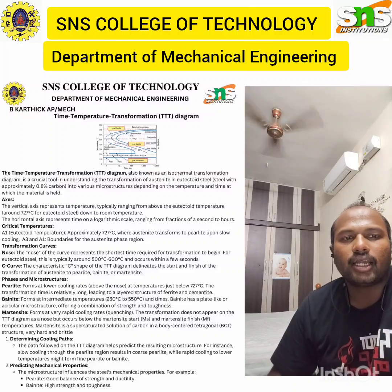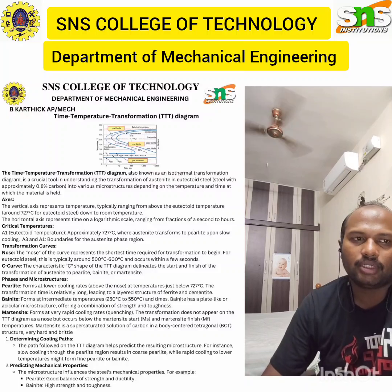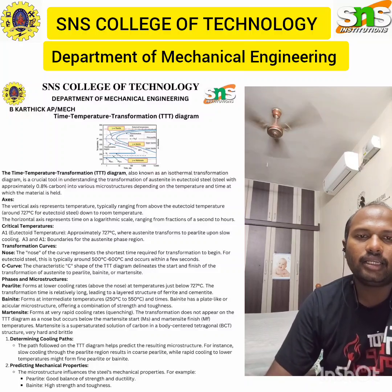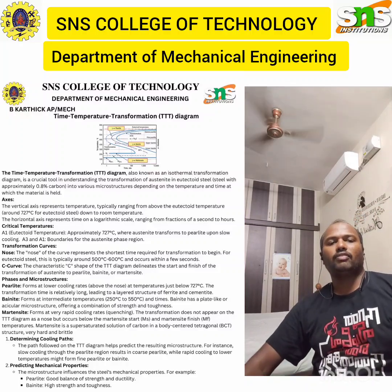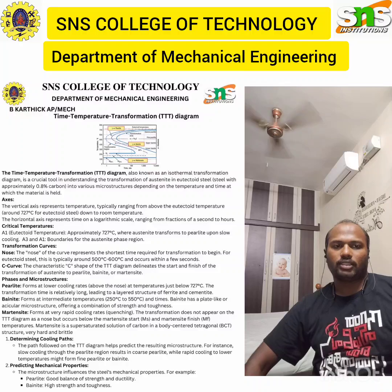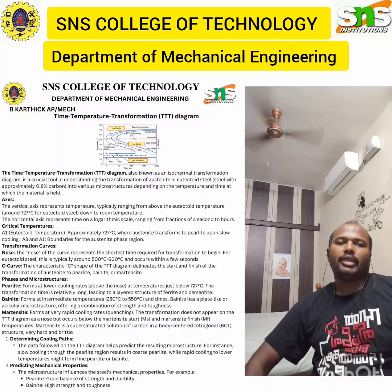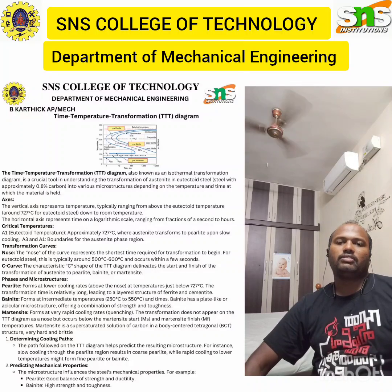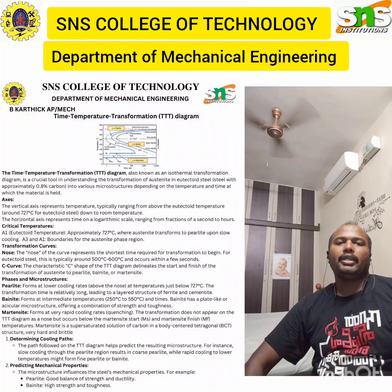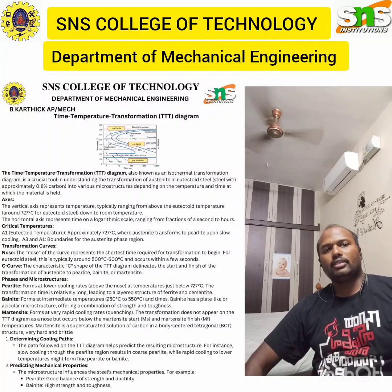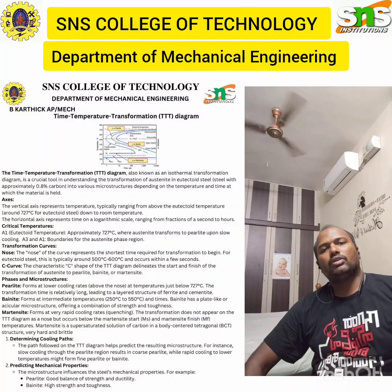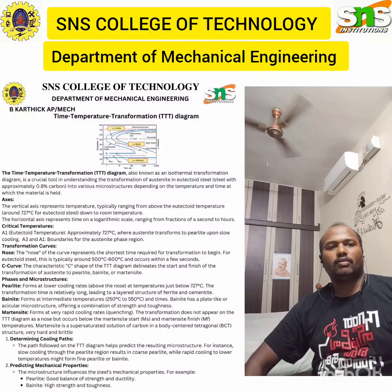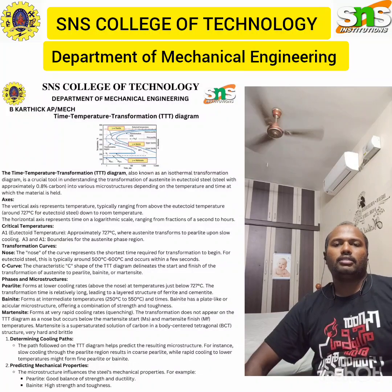The characteristic C curve of the TTT diagram delineates the start and finish of transformation of austenite to pearlite, bainite, and martensite. Pearlite forms at a lower cooling rate below 727°C, and the transformation time is relatively long, leading to a layered structure of ferrite and cementite.